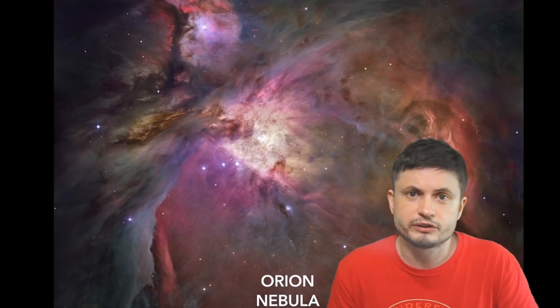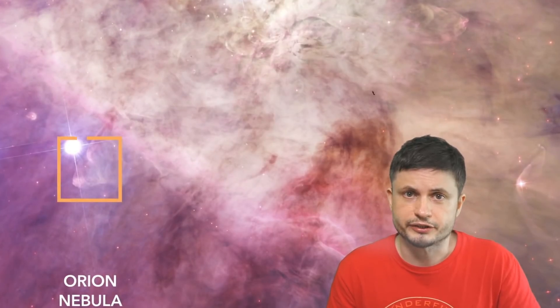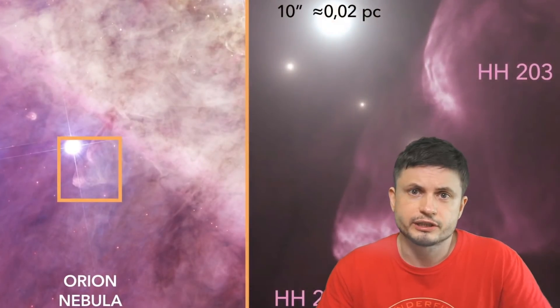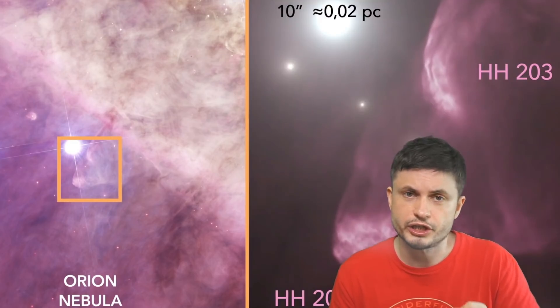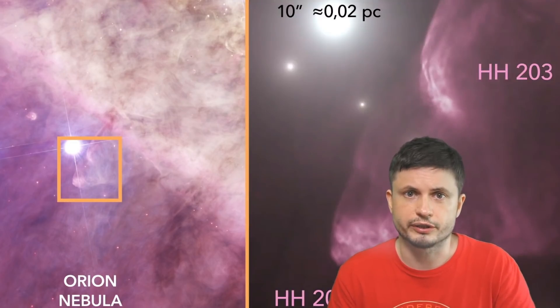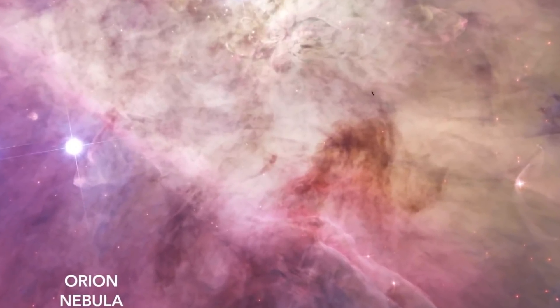And so generally whenever stars start to form they often form these HH objects. So the object itself is not the jets. It's actually the result of the interaction of the jet with the gas around the star. And so in this case on the right you see that HH-203 and 204 are these bright patches of light formed by the interaction of the jet and the gas around the star. And so how does all of this work?